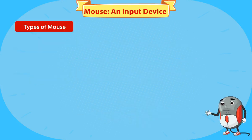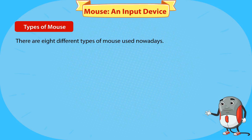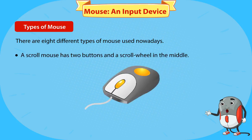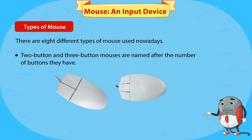There are eight different types of mouse used nowadays. A scroll mouse has two buttons and a scroll wheel in the middle. Two-button and three-button mouses are named after the number of buttons they have.